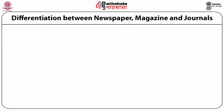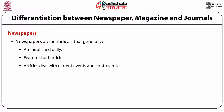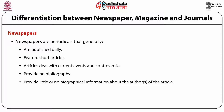Let us look at the differentiation between newspapers, magazines, and journals — the three main types of periodicals that LIS professionals deal with almost every day. Newspapers are periodicals generally published daily, also called national dailies. They feature short articles dealing with current events and controversies. They do not provide a bibliography and provide little or no biographical information about the authors.